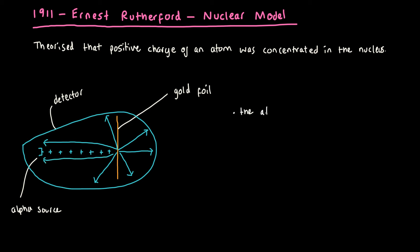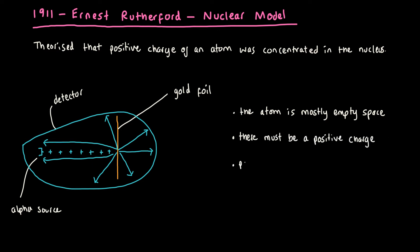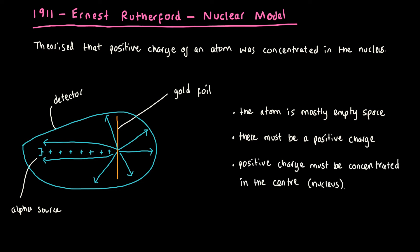From this, he concluded that the atom is mostly empty space. There must be a positive charge causing the positively charged alpha particles to deflect and bounce back. And he finally concluded that the positive charge must be concentrated in the centre, which makes sense since protons are in the nucleus.